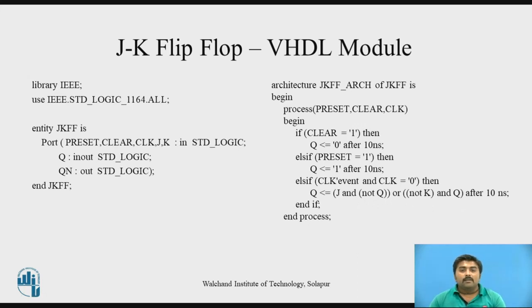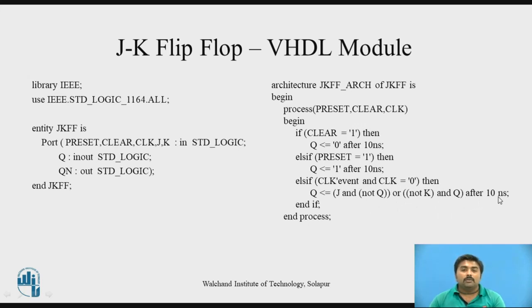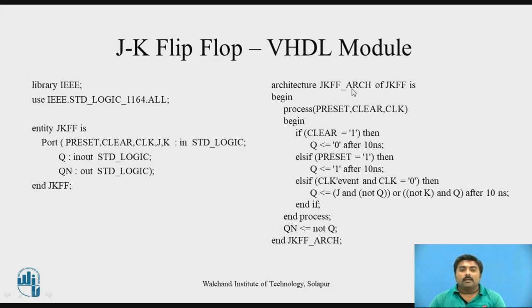Then Q is assigned the Boolean expression derived from the JK truth table: Q = (J and not Q) or (not K and Q), after 10 nanoseconds. This is why Q is declared as inout — because not Q requires Q to be read as an input. After the process, Q-bar is assigned as 'not Q', then end architecture. This completes the VHDL module for the JK flip-flop.